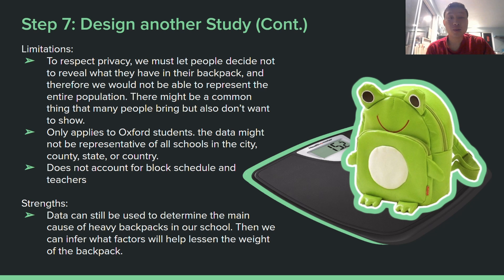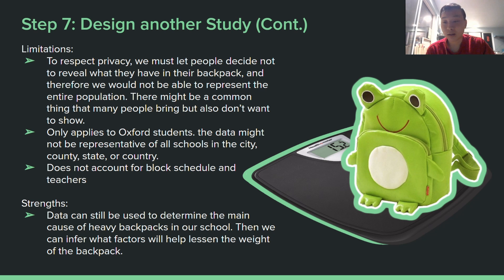The limitations of this experiment: we have to respect people's privacy — we can ask to weigh the stuff in their backpack, but they might not let us. So we won't be able to accurately measure what's in everyone's backpacks. Also, this would only apply to Oxford students, and the data might be skewed because it wouldn't represent the entire school, district, city, or state. It also does not account for block schedule — people bring different things on different days, which is why it would be better to take an average. The strengths of the study: the data can still help determine the main cause of heavy backpacks in our school. Knowing that would help us infer what factors lessen backpack weight — probably notebooks and textbooks — and would verify or refute whether technology helps lessen backpack weight. And that's it, thank you.